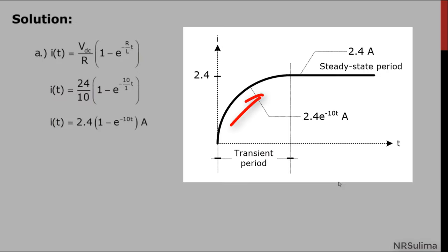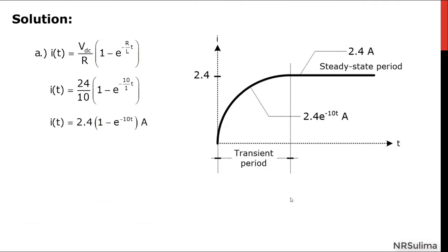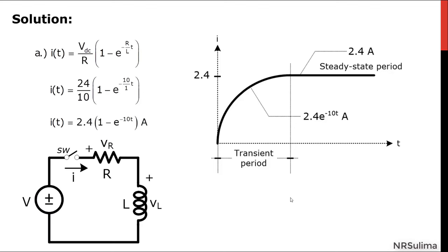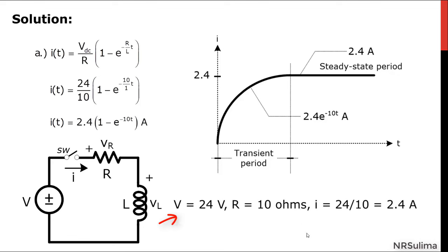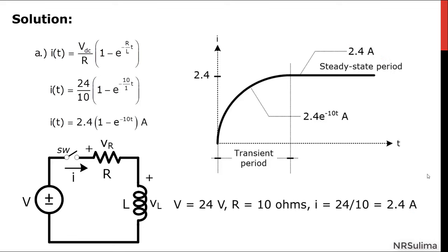Take note that while the current is increasing during the transient period, there will come a point in time where the current will be fixed at 2.4 amperes. If we treat this circuit as a purely resistive one and solve for the current by dividing 24 over 10, the answer is the same as the steady state value. Therefore, for a series RL circuit with a DC voltage source, as time approaches infinity, the inductor will act as a short circuit during the steady state period.